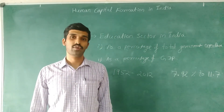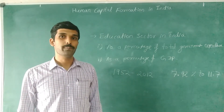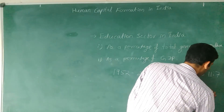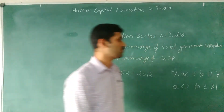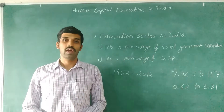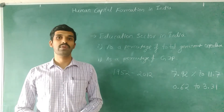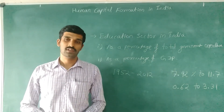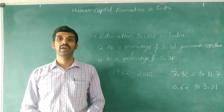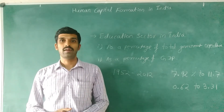As a percentage of GDP, education expenditure increased from 0.62% to 3.31% over the period from 1952 to 2012. Throughout this period, expenditure on education was not uniform — in some years more was spent and in some years less.